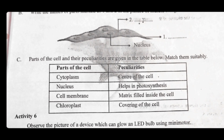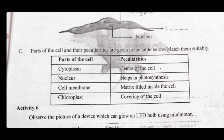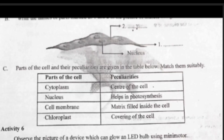Question C: parts of the cell and their peculiarities are given in the table below — match them suitably. Cytoplasm is the matrix filled inside the cell. Nucleus is the center of the cell. Cell membrane is the covering of the cell. Chloroplast helps in photosynthesis.